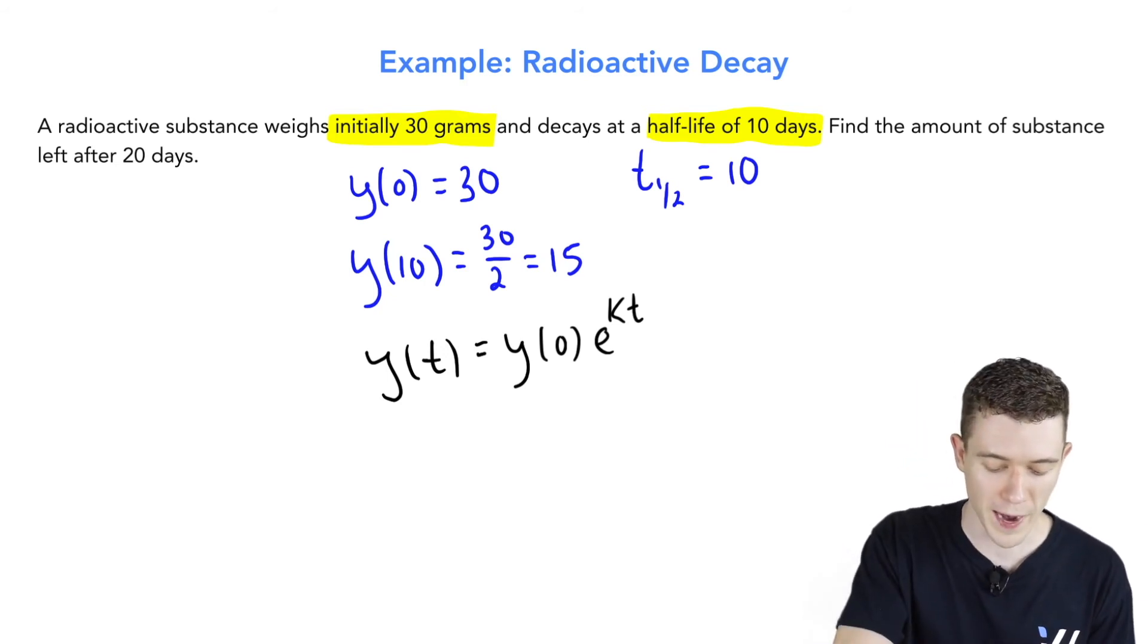Let's fill this in. Right off the bat, we know what y(0) is. y initial was given to be 30, e to the kt.